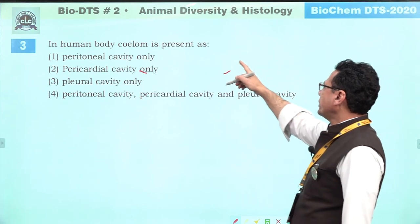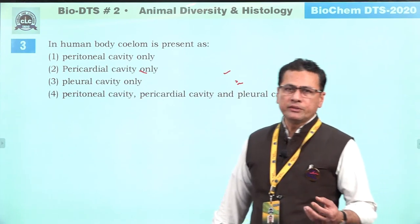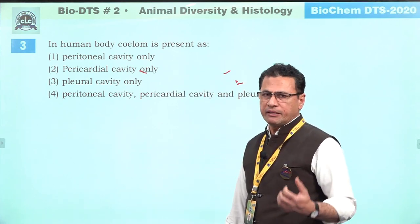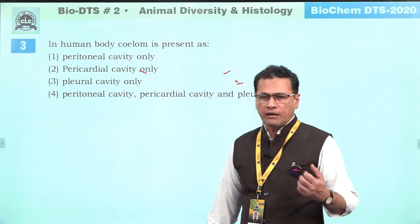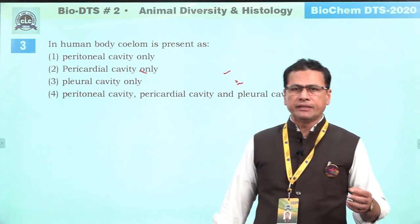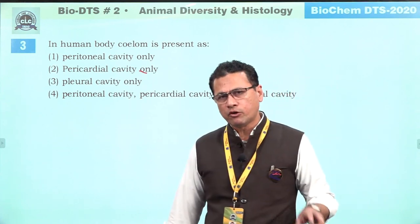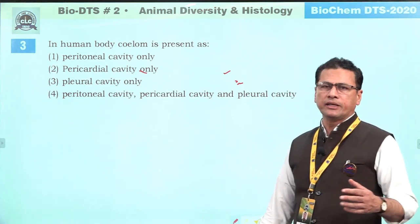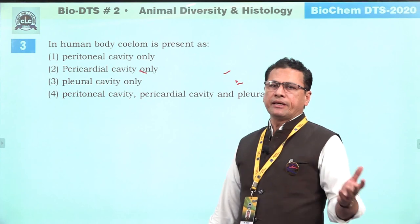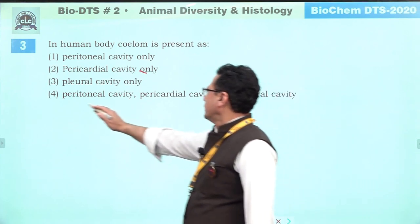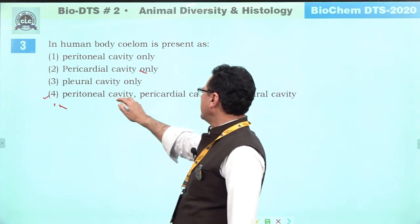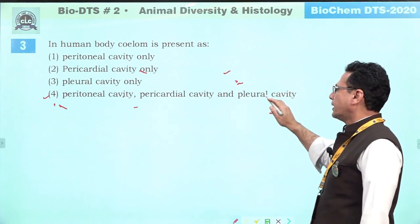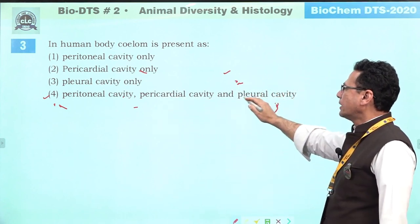In the human body, the coelom is the cavity lined by mesoderm. In our body, the mesoderm-lined cavities are found around the lungs in the form of pleura, around the visceral organs in the form of peritoneum, and the third one around the heart is pericardium. So the fourth answer — peritoneal cavity, pericardial cavity around the heart, and pleural cavity along the lungs — is the right answer.